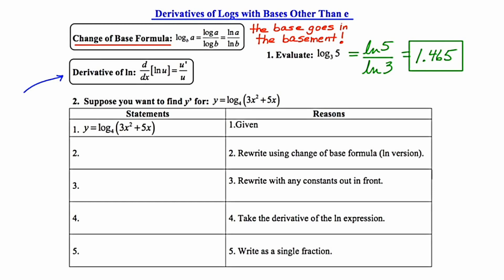Step 2 says rewrite using the change of base formula, the LN version. So I'm going to rewrite this as the ratio of two natural logs. Let's remember that the base goes in the basement.